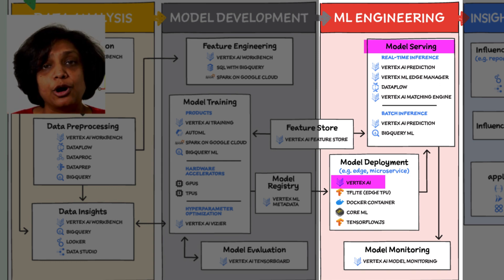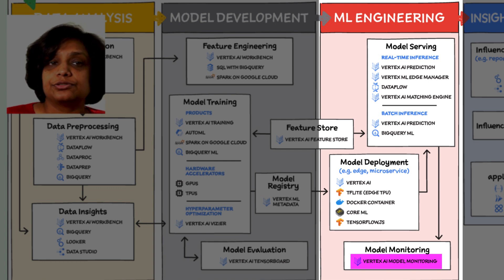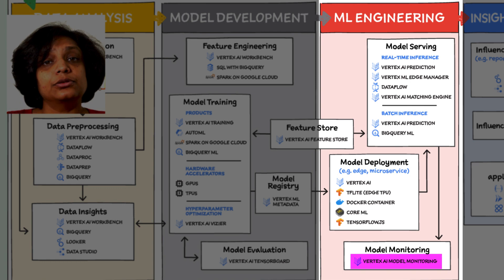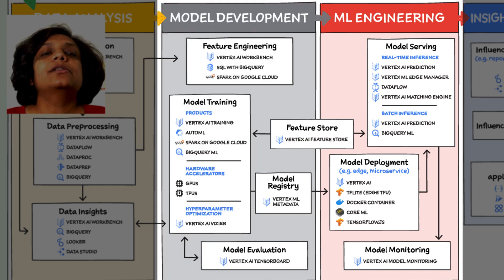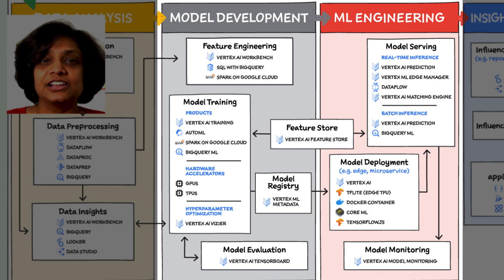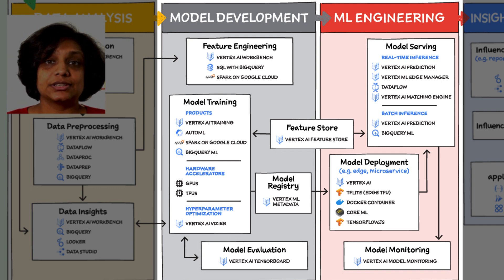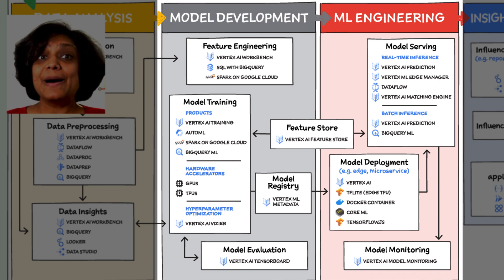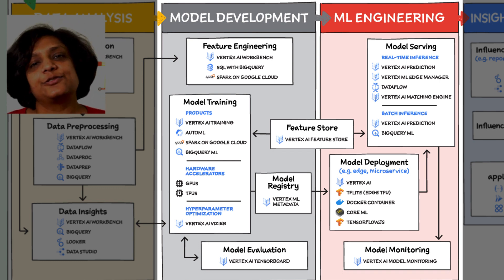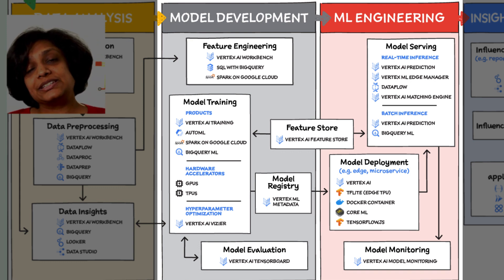Vertex AI model monitoring provides the ability to monitor prediction requests flowing into the deployed model and automatically alert model owners whenever production traffic deviates beyond user-defined thresholds compared to historical prediction requests. MLOps is the industry term for modern, well-engineered ML services with scalability, monitoring, reliability, automated CI/CD, and many other characteristics. The ML engineering features provided by Vertex AI are informed by Google's extensive experience deploying and operating internal ML services, and the goal is to provide everyone with easy access to essential MLOps services and best practices.